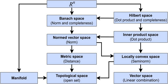Uniform spaces do not introduce distances, but still allow one to use uniform continuity, Cauchy sequences or filters or nets, completeness and completion. Every uniform space is also a topological space. Every linear topological space, metrizable or not, is also a uniform space, and is complete in finite dimension but generally incomplete in infinite dimension. More generally, every commutative topological group is also a uniform space. A non-commutative topological group, however, carries two uniform structures, one left-invariant, the other right-invariant.